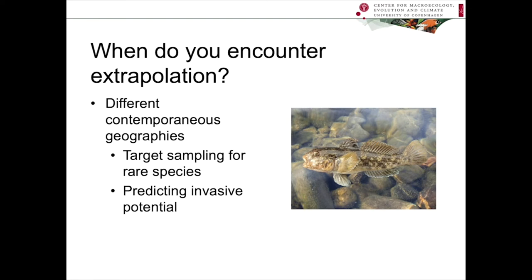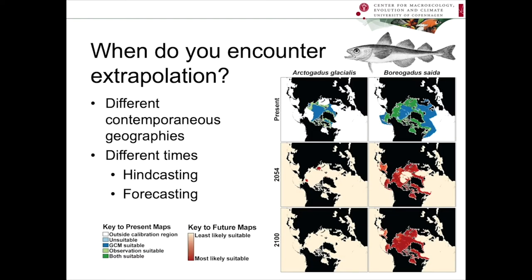Where else might I find this rare species? The other kind of extrapolation involves predicting into different time periods — either hindcasting, asking where a species was potentially suitable in the past, or forecasting where it will be suitable in the future. This is an example with some fish species trying to project where there will be suitable habitat under climate change.